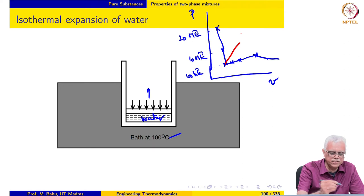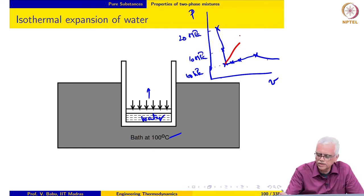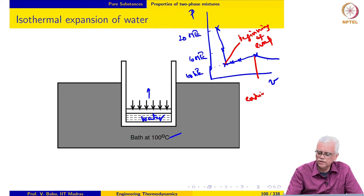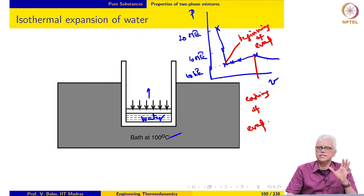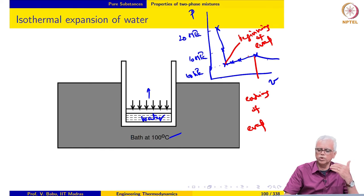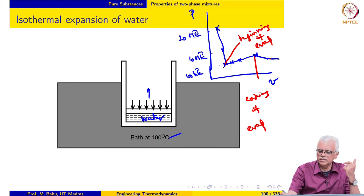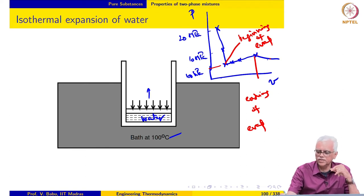Two important points can be noticed. The first point is the beginning of evaporation, and the other is the end of evaporation. In between these two points, the pressure remains constant and the temperature is already being maintained constant. So notice that as phase change takes place, both pressure and temperature remain constant. This means that when phase change takes place, pressure and temperature are not independent properties — they are independent in the liquid and vapor regions, but not during phase change.